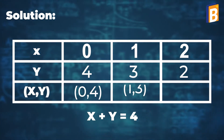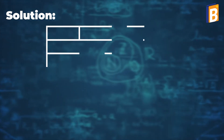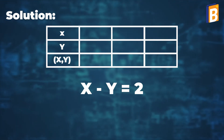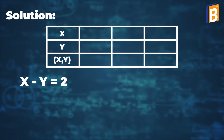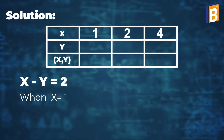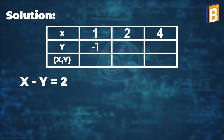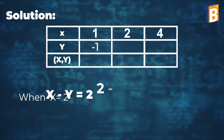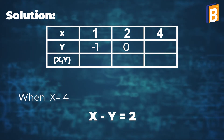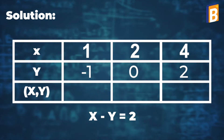Now we will put all the values of x and y in the table. We will follow the same steps for linear equation x minus y equal to 2. Here we assume the values of x are 0, 1, and 4. When x equal to 1, the value of y will be minus 1. For x equal to 2, the value of y will be 0. For x equal to 4, the value of y will be 2. Now we will put all the values of x and y in the table.